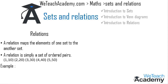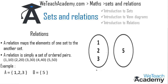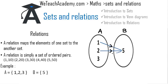Let us consider an example: set A = {1, 2, 3} and set B = {5}. We represent this in a Venn diagram, placing elements of A in one diagram and element 5 of B in the other. Mapping each element of A to the element of B: 1→5, 2→5, 3→5. We get the ordered pairs: (1,5), (2,5), and (3,5).